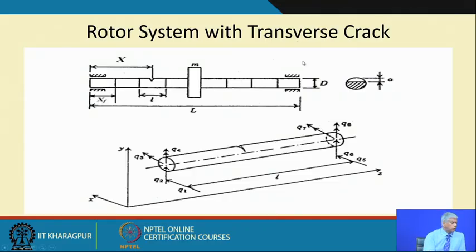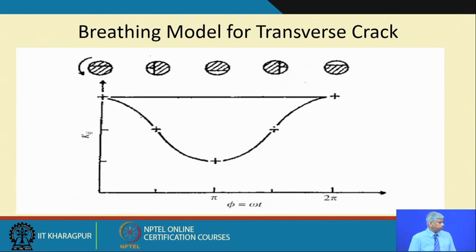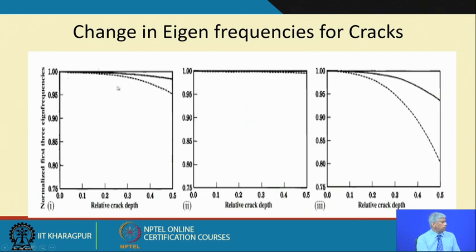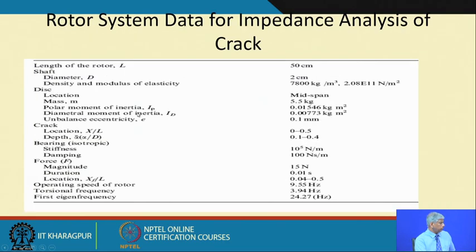This rotor system with a transverse crack was modeled by finite element methods. The normalized crack depth is ᾱ = a/d. This can be modeled using the finite element method, and for a transverse crack there are breathing modes — the crack will open and close depending on the rotational position of the shaft. These signatures lead to changes in the eigenfrequencies of the cracked system, because the natural frequency changes due to the factor k/m.